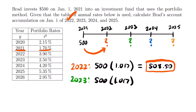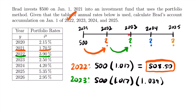We're still going to multiply by 1.017 for one year—that accumulates the $500 from 2021 to 2022. But now we need to multiply by another accumulation factor for one year using the interest rate for 2022, which will bring us forward to 2023. We'll use the portfolio rate that corresponds to 2022: one plus 3.9%, which is 1.039. So $500 times 1.017 times 1.039 gives us the accumulated value at the beginning of 2023.